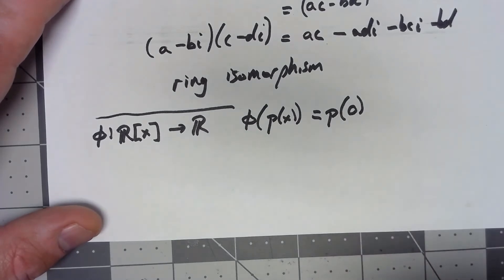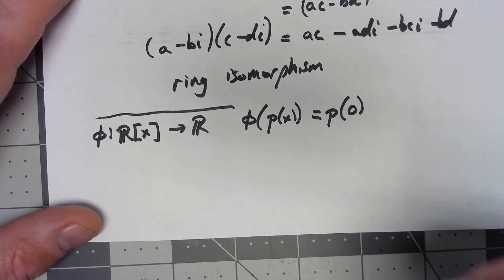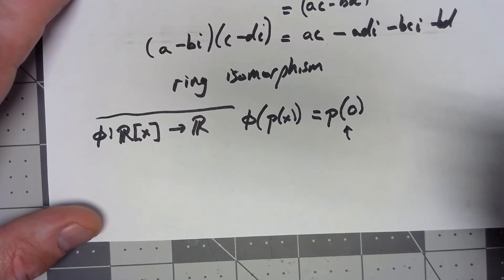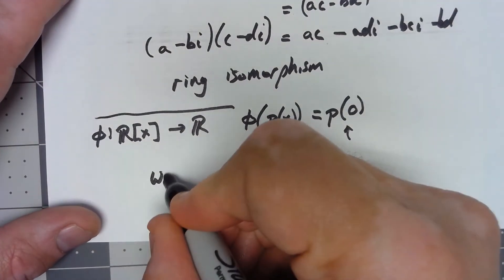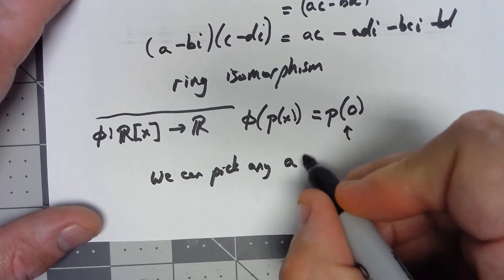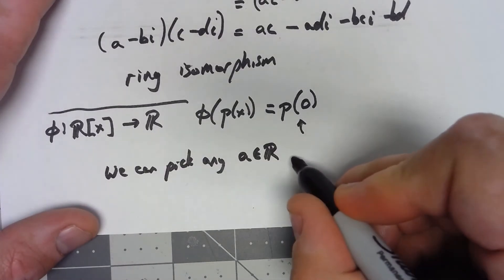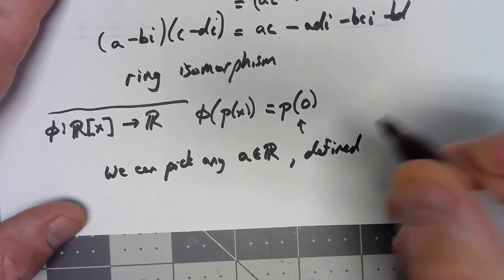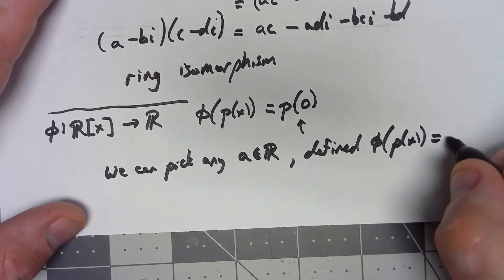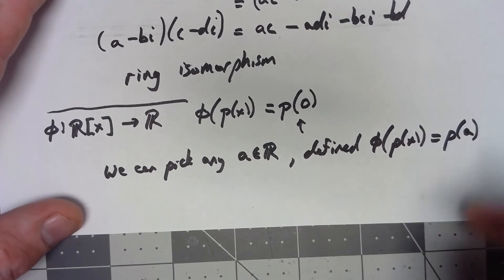But this is actually a little bit interesting because if we break it down and go into everything, this doesn't have to be just 0. In fact, we can pick any number that's a real number and then defining φ of a polynomial p(x) as p of that real number a, then this thing is going to be a homomorphism.